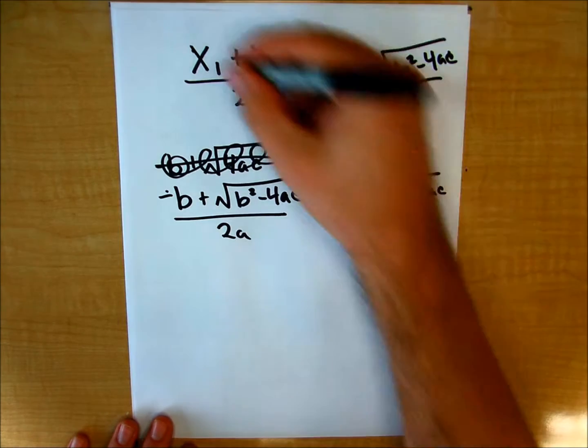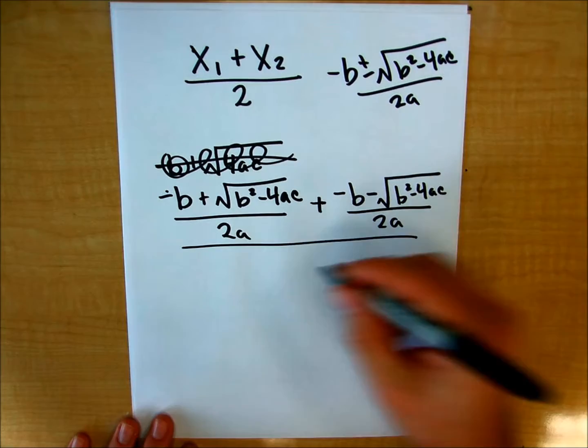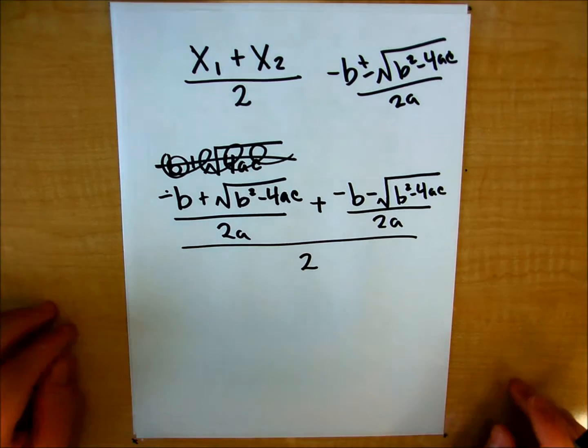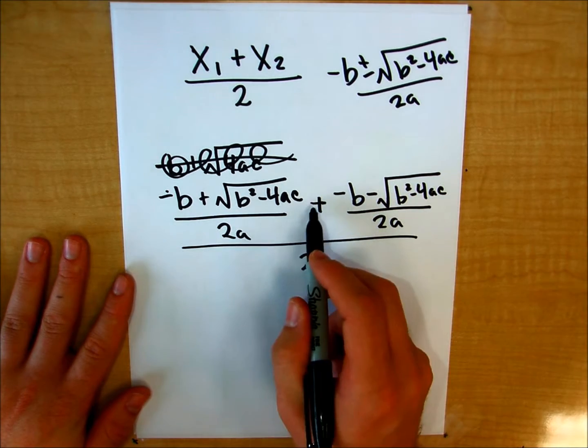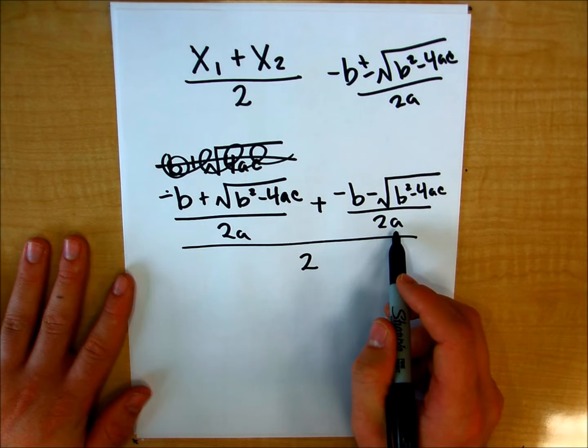And again, this is all over 2. Well, I can combine some things. This is addition and I have a common denominator here.